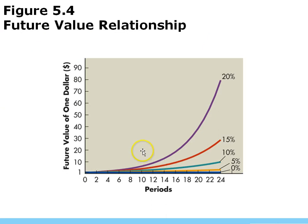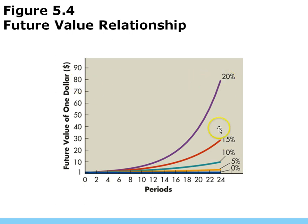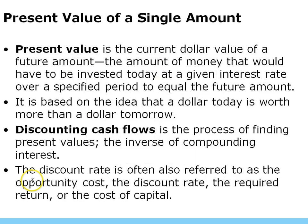Here's the relationship of future value. The longer you have money invested, the more compounding you get. If this is the future value of $1 over 24 periods, at a 20% return that $1 turns into $80. Going from 20% to 15%, we go from $80 to about $30. At 10%, we get to about $10. You can see the power of compounding really escalates the value of your money.